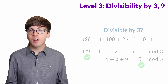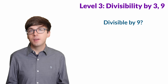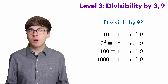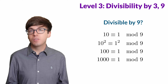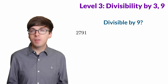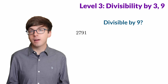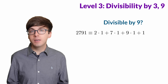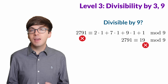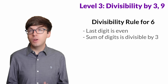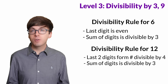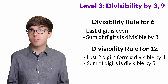The same trick also works for 9. When we divide 10 by 9, we get a remainder of 1, so 10 is congruent to 1 modulo 9. This means 100, 1000, and so on all have a remainder of 1 when divided by 9. So we can add up all the digits and see if that sum is divisible by 9. Let's check if 2791 is divisible by 9: 2 plus 7 plus 9 plus 1 equals 19, which is not divisible by 9, so the original number is not divisible either. And now we automatically get a divisibility trick for 6 — check that the number is divisible by both 2 and 3. We can also check for divisibility by 12 by checking if the number is divisible by both 3 and 4.